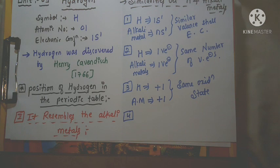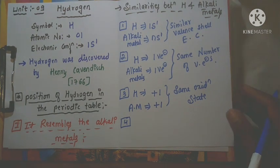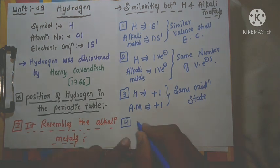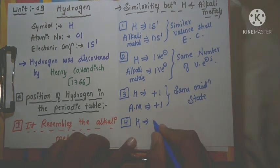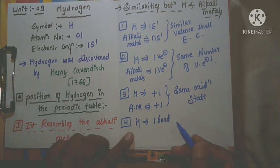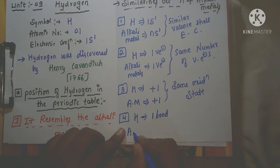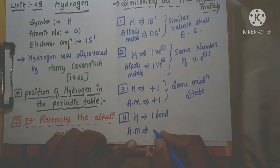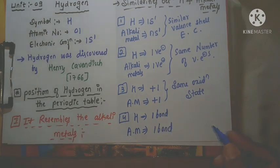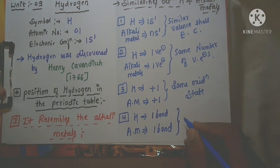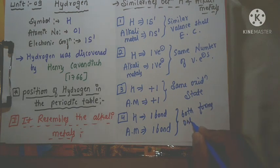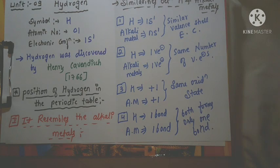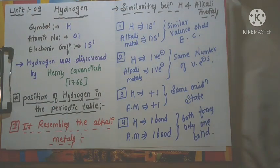The fourth similarity: one hydrogen atom can form only one bond with another atom. Similarly, alkali metals can also form only one bond with other elements. Therefore, both hydrogen and alkali metals can form only one bond. These are the main similarities between hydrogen and the alkali metals.